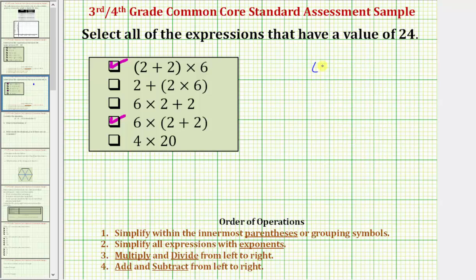The last expression is four times 20. Well, four times 20 is equal to 80, which is not equal to 24, and therefore we don't check this box. So our final answer is the first expression and this fourth expression are equal to 24.